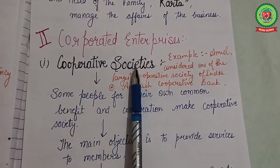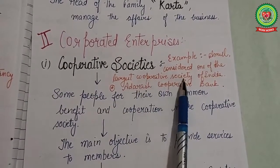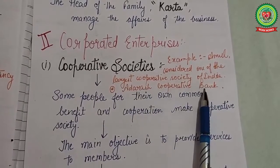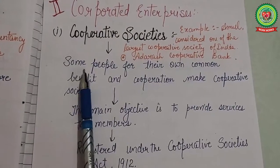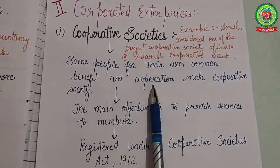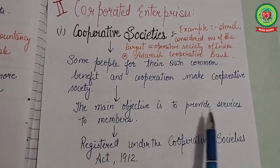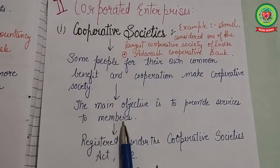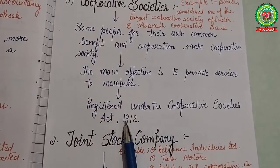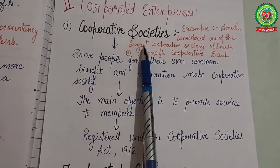Next is cooperative enterprises. The first type is cooperative societies. Amul is considered one of the largest cooperative societies in India, along with cooperative banks. People form cooperative societies for their own common benefit and cooperation. The main objective is to provide services to its members. Cooperative societies are registered under the Cooperative Society Act, 1912.